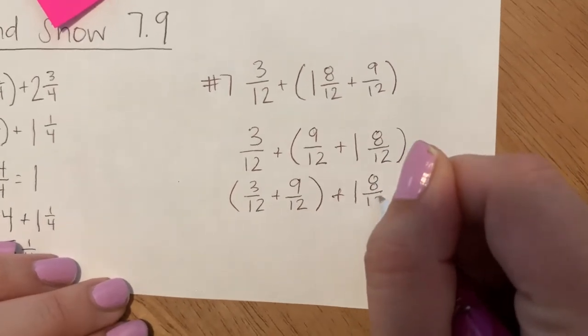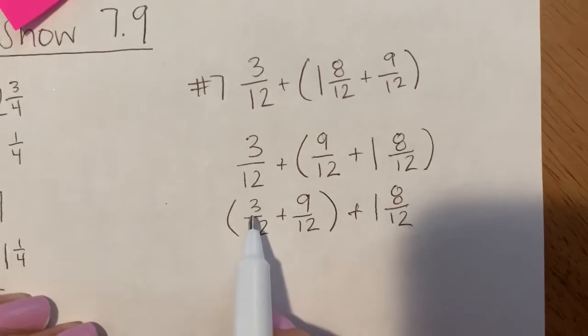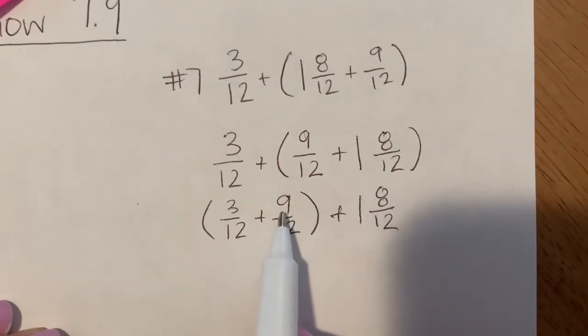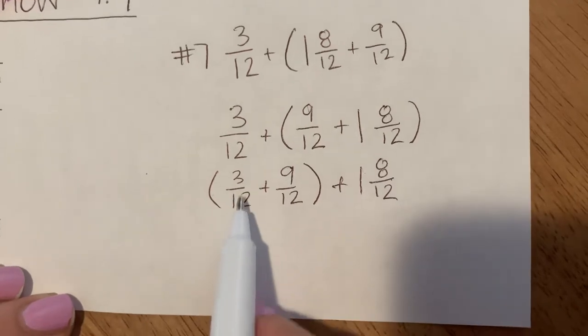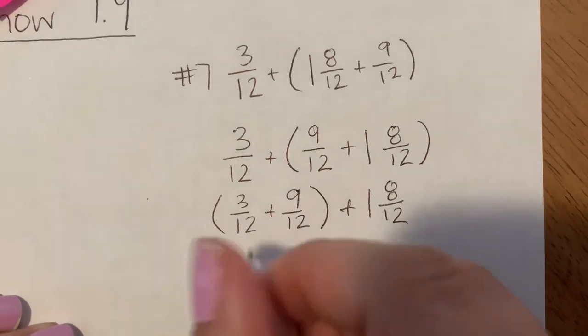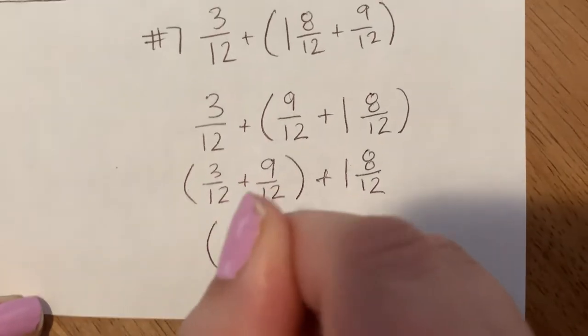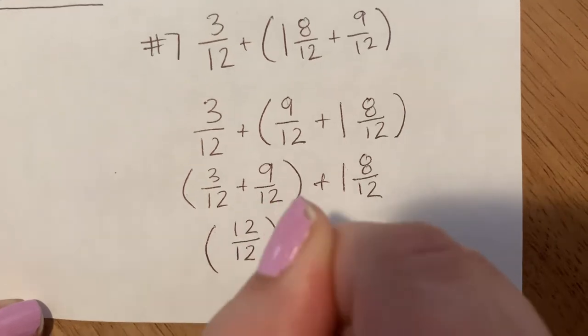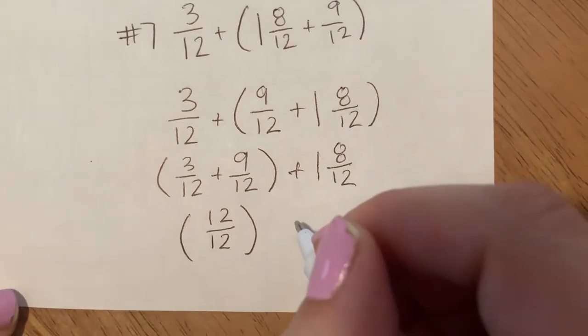Well, in my head very quickly I know that 3 plus 9 equals 12, so I know that 3 twelfths plus 9 twelfths equals 12 twelfths. And I know that 12 twelfths is equal to 1 whole.